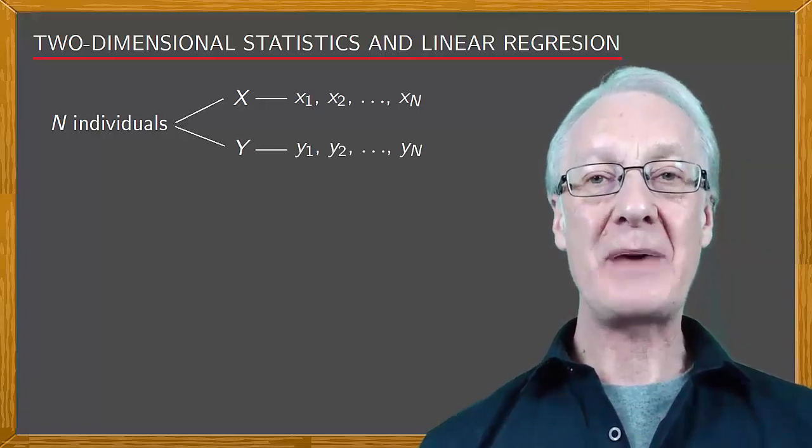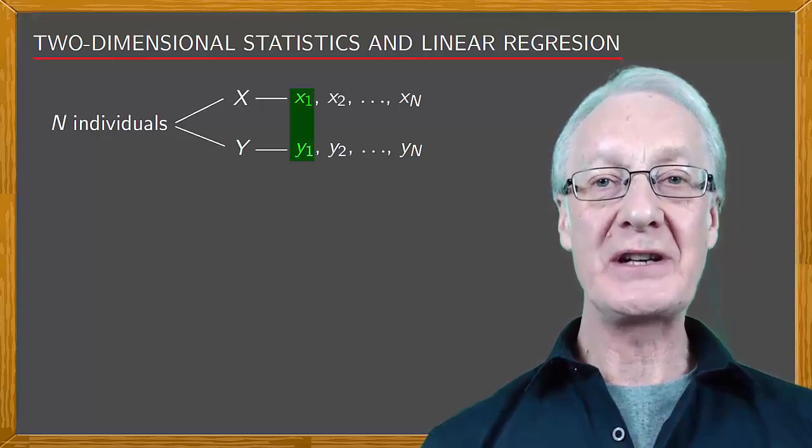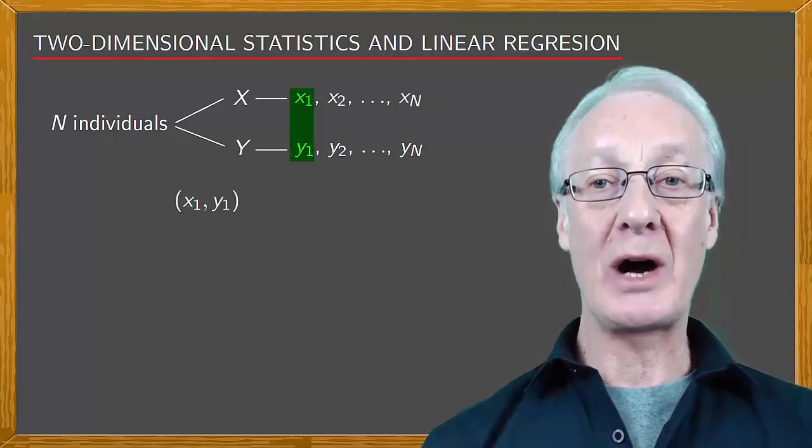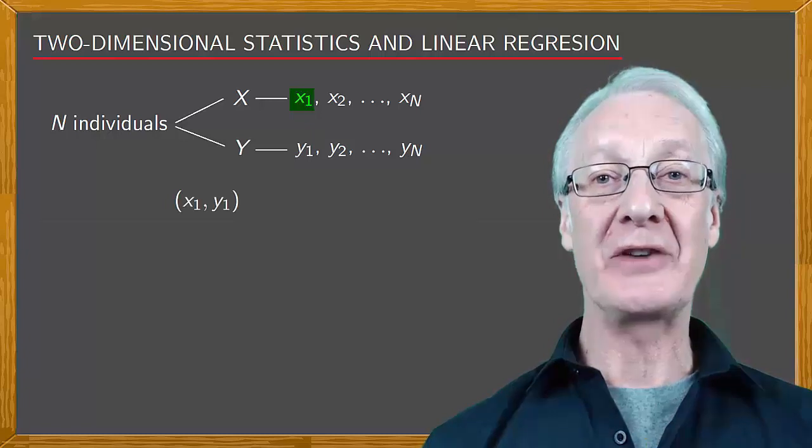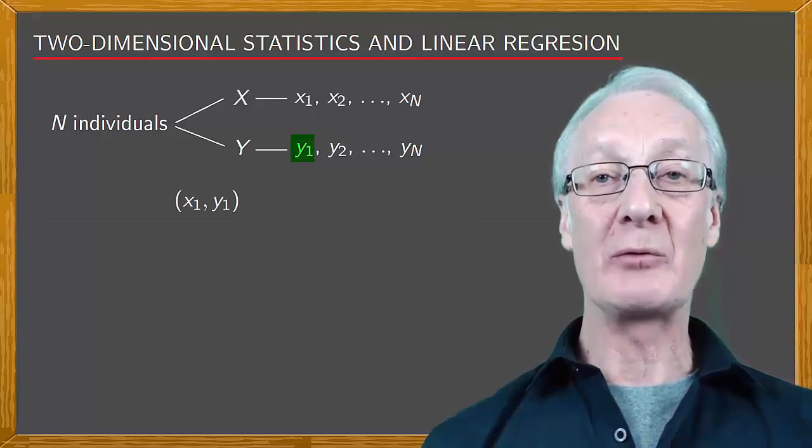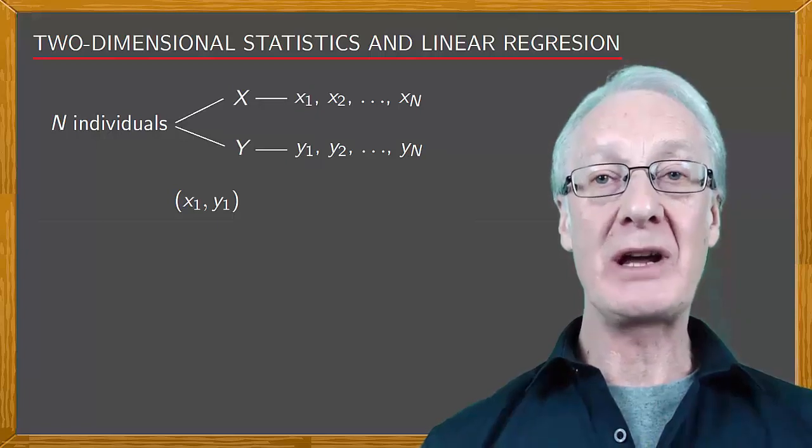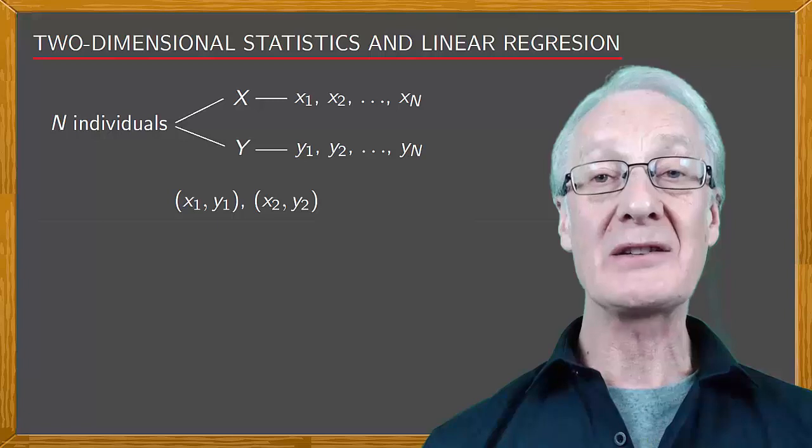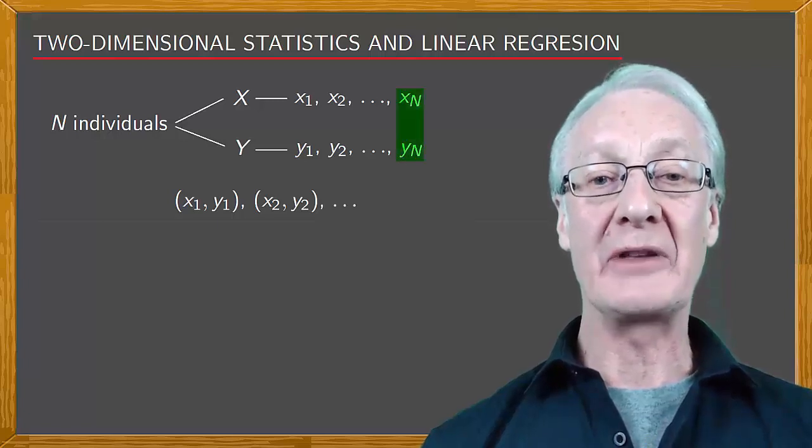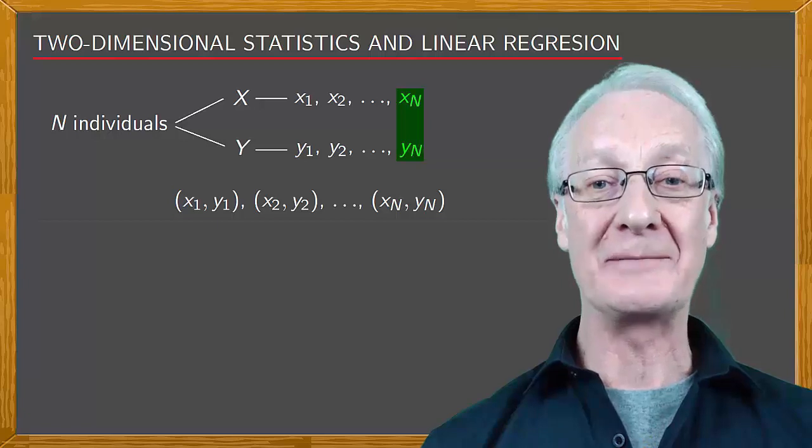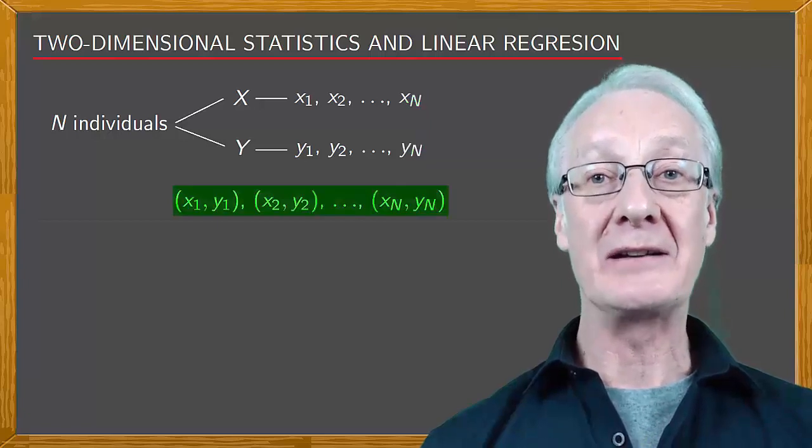Now let's consider the pairs of data. For the first individual we have the pair (x1, y1), where x1 is the datum corresponding to the statistical variable x, and y1 the datum corresponding to the variable y. In the same way, for the second individual we have the pair (x2, y2), and so on, up to the last individual, for whom we have the pair (xn, yn). In total, there are n data pairs.